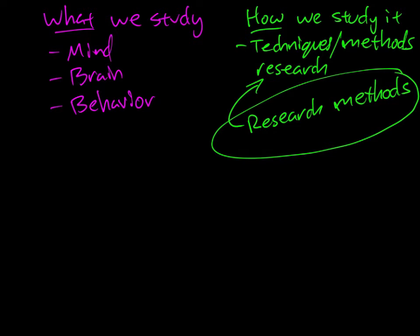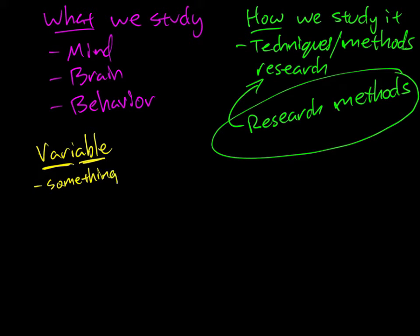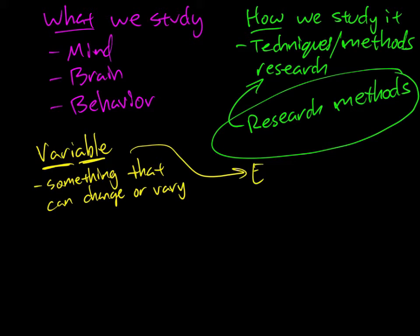The thing I want to start with is something you'll see in essentially every psychological study, and that's something called variables. It's actually nice that the word itself tells us what it means — a variable is just anything that's able to vary, something that can change. It could vary over time, or vary from one person to the next. For example, height is a good variable because people can be taller or shorter, and height can vary over the course of a person's lifetime.